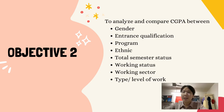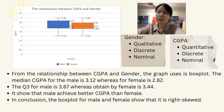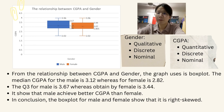Objective 2 is to analyze and compare CGPA between gender, entrance qualifications, programme, ethnic, total semester status, working status, working sector, and type of work. From the relationship between CGPA and gender, the graph result is a box plot. The median CGPA for male is 3.12, whereas for female it is 2.82. The third quartile for male is 3.67, whereas for female it is 3.44. This shows that males achieved better CGPA than females.